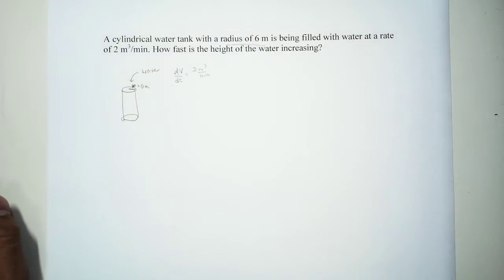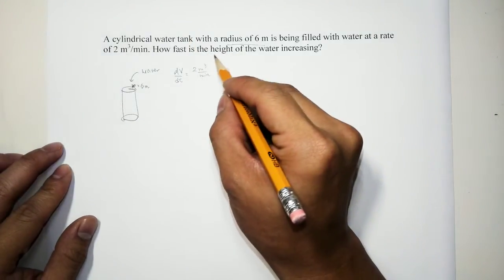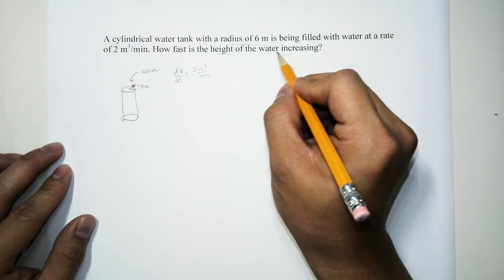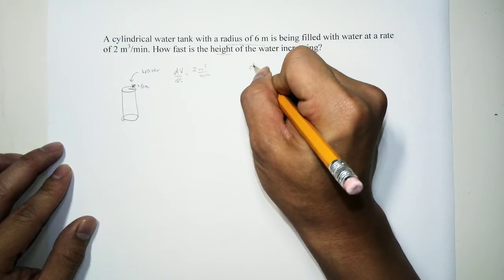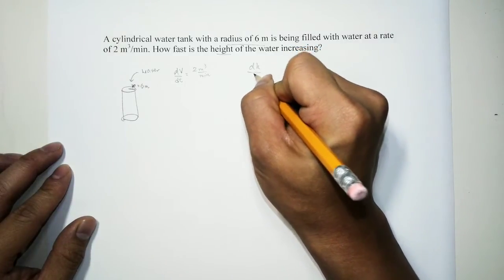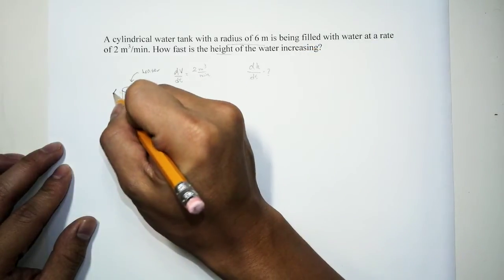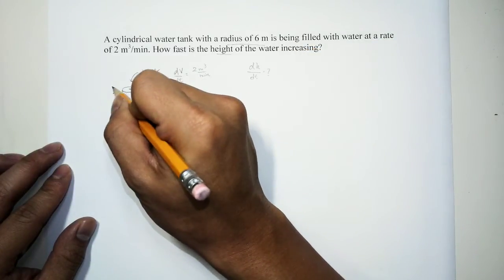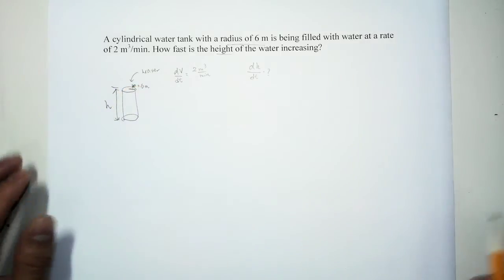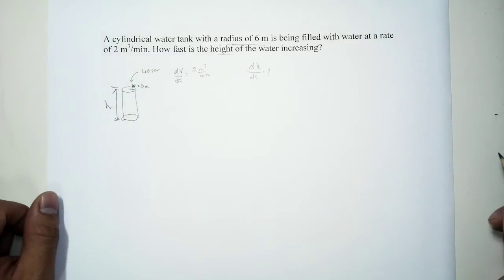Alright, so now it's asking how fast is the height of the water increasing? So what we are trying to find is dh/dt. So let's go ahead and label this cylinder here, h.